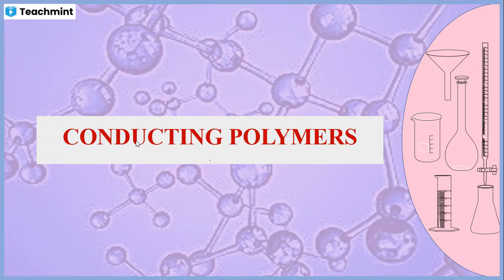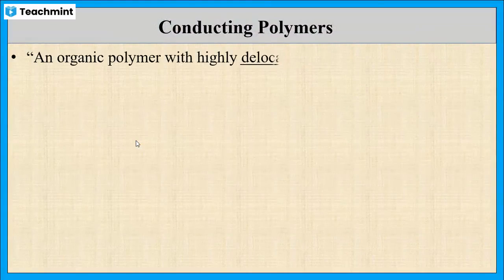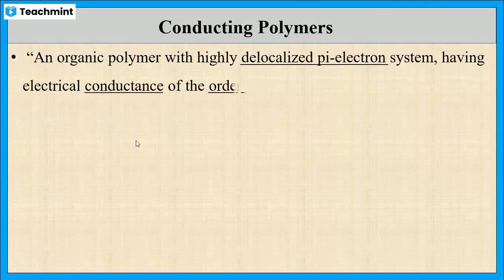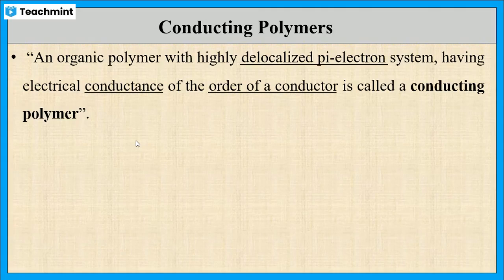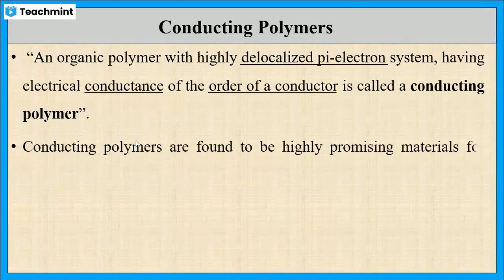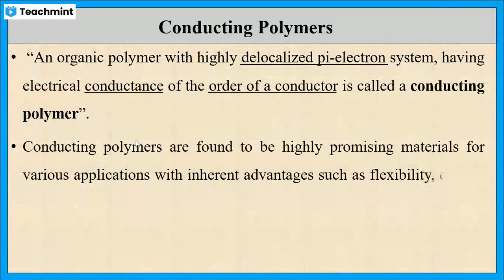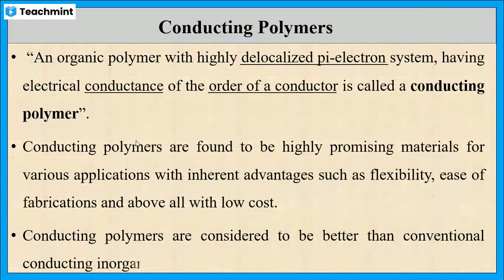In this session, let us discuss about conducting polymers. Conducting polymers can be defined as an organic polymer with a highly delocalized pi-electron system and having electrical conductance of the order of a conductor. These are highly promising materials for various applications due to their flexibility for fabrication and low cost. Conducting polymers show better performance than inorganic materials.